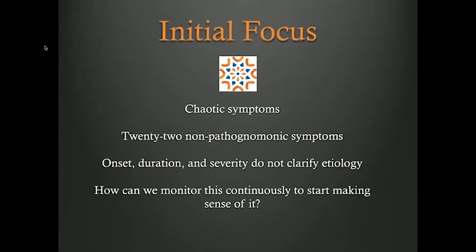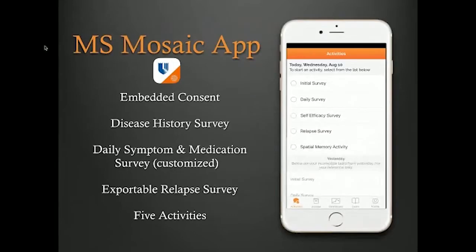Multiple sclerosis is an example of one of these chronic diseases. It has very chaotic symptoms — nobody really knows whether it's one disease or multiple diseases. The onset, duration, and severity of symptoms are not very predictable. The question we asked is: how can we monitor this continuously and start making sense of it? We developed this app, which we call MS Mosaic, which is currently available in the Apple App Store.